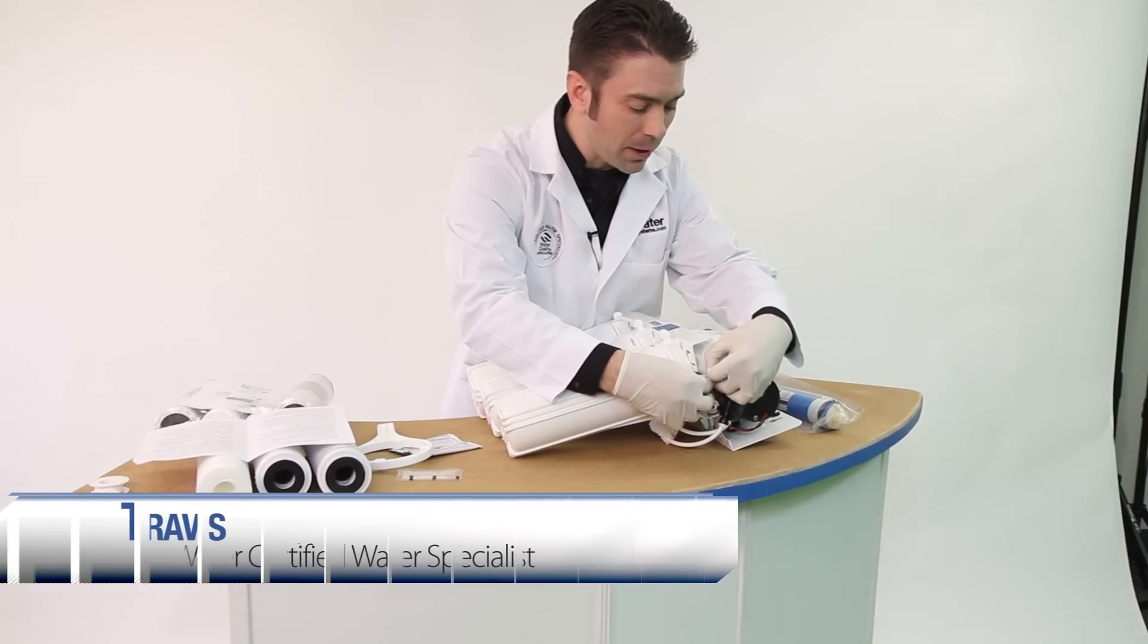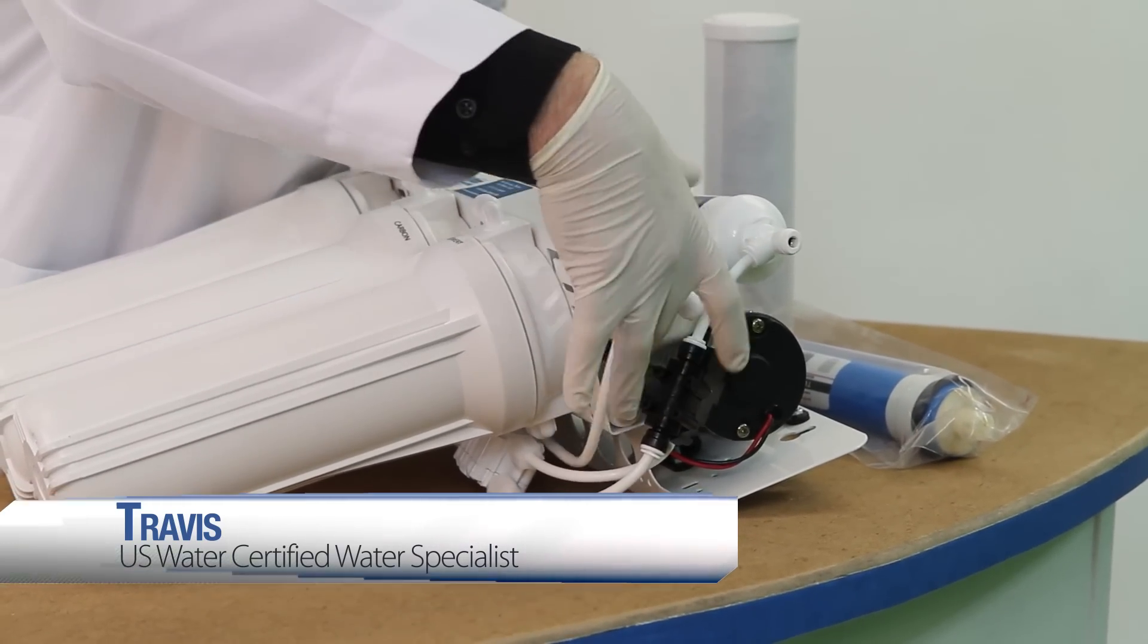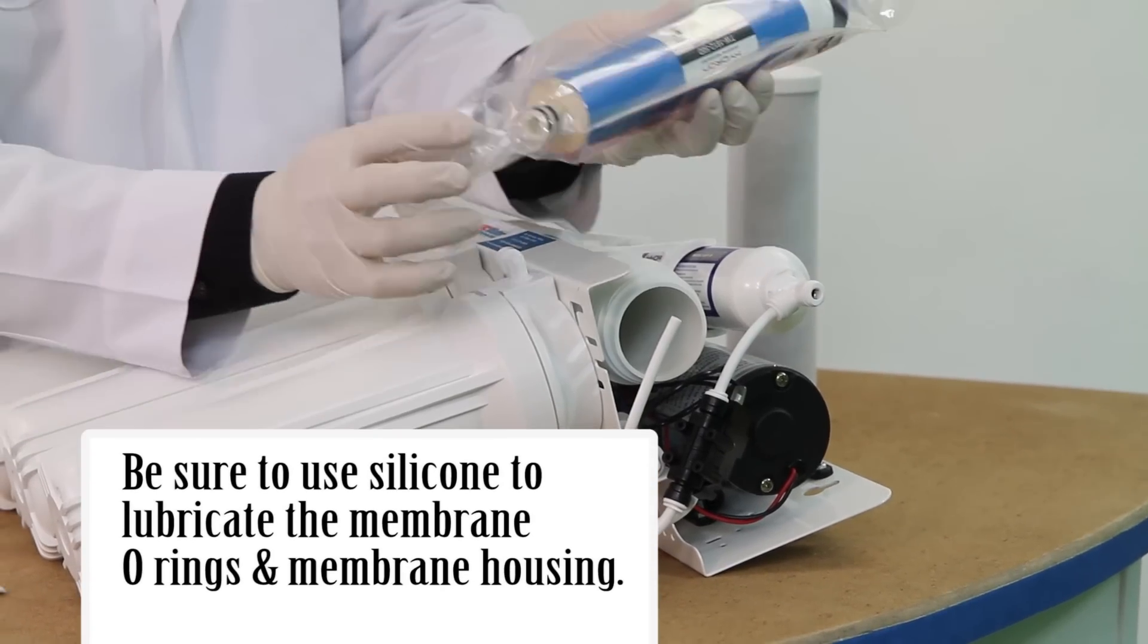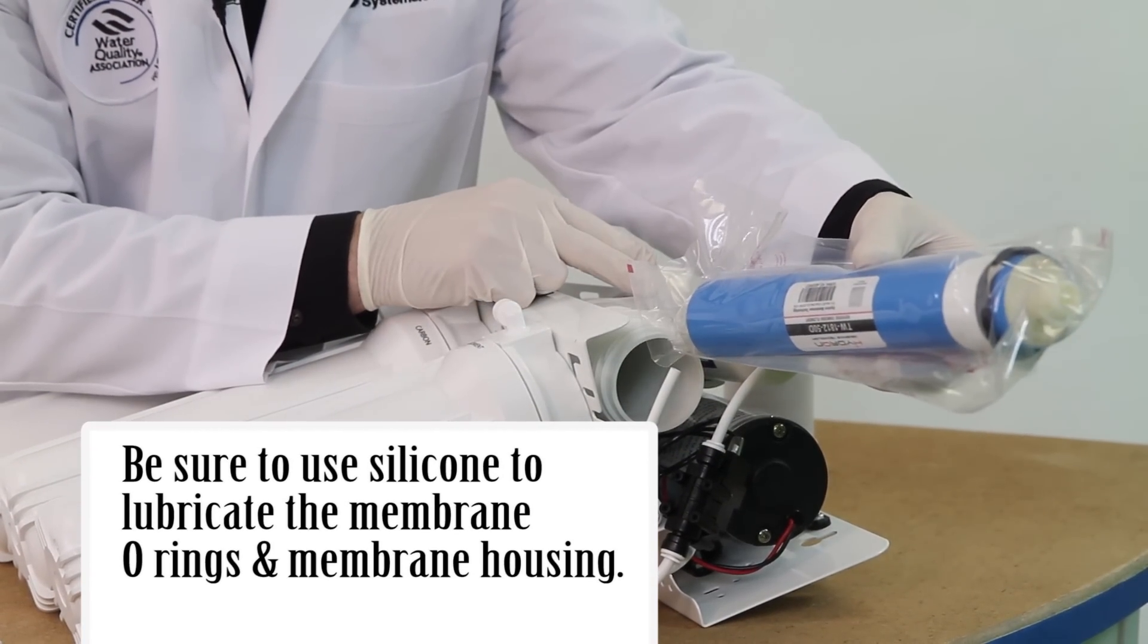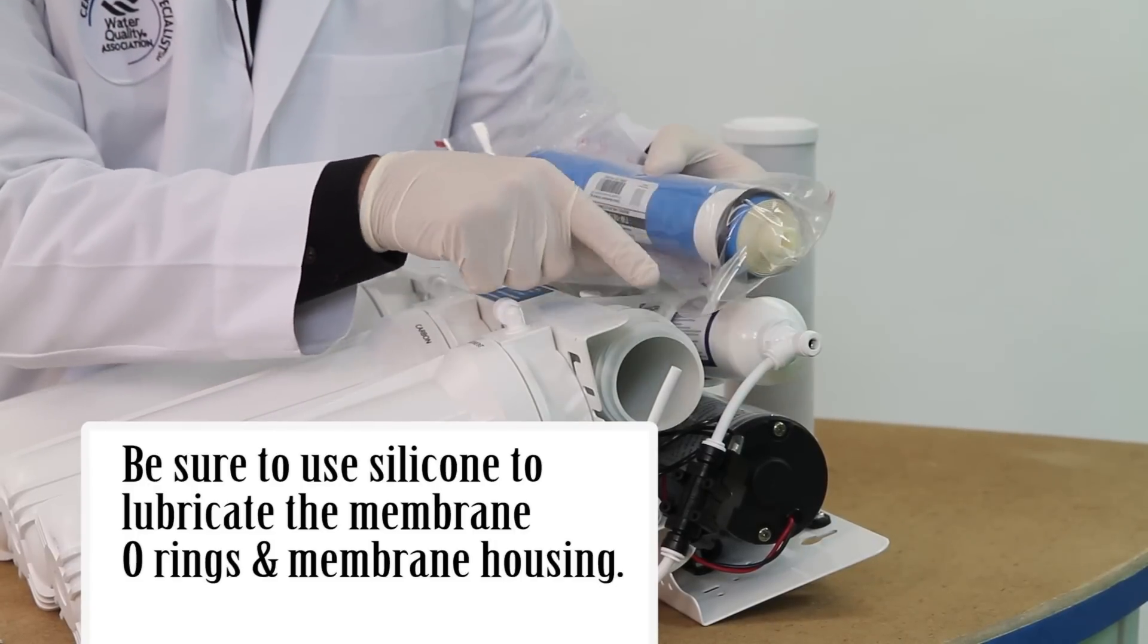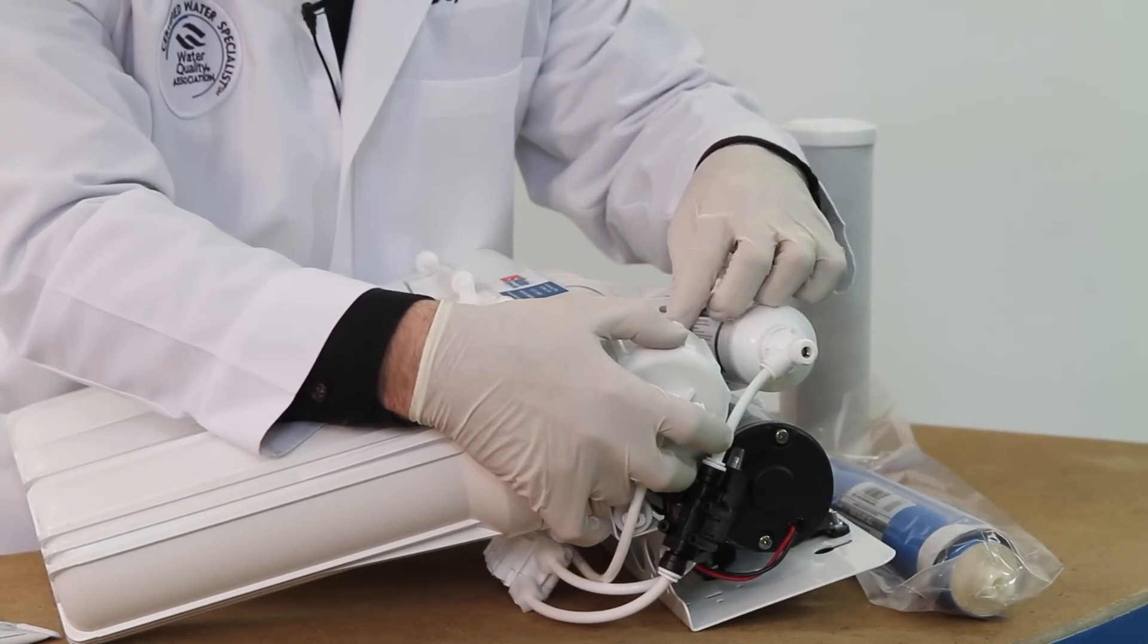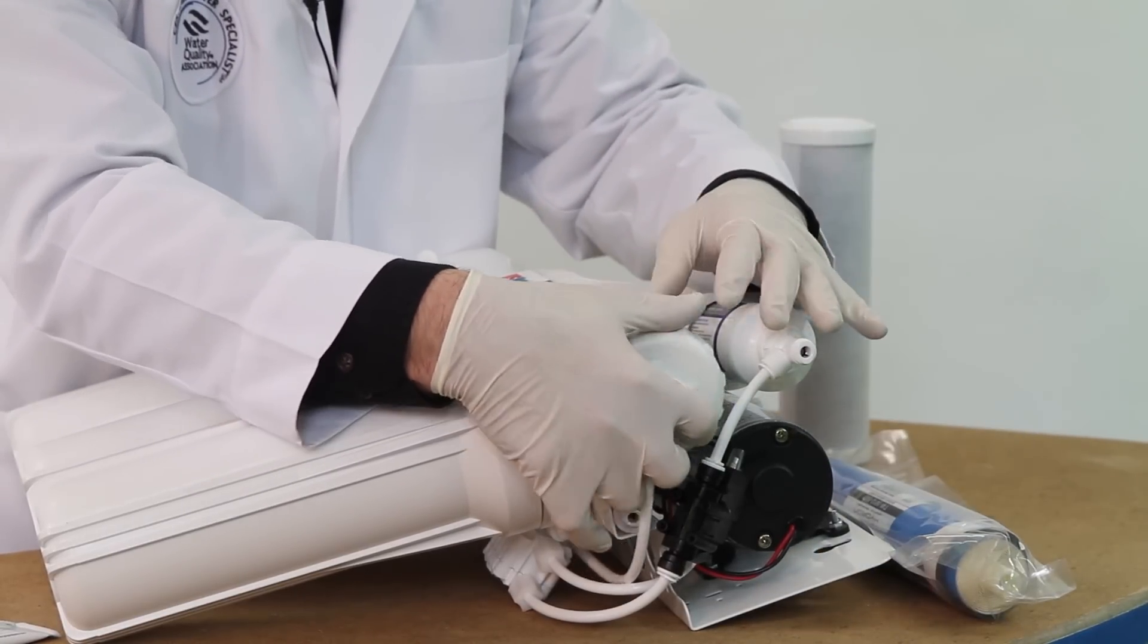So you're going to reinstall your membrane. Same way, removing this tube. And this goes in with the double O-ring will be inserted first, and you'll have your brine seal near the cap. And this should screw in all the way. You shouldn't be able to see threads when this is inserted properly. You shouldn't be able to see any threads right here.